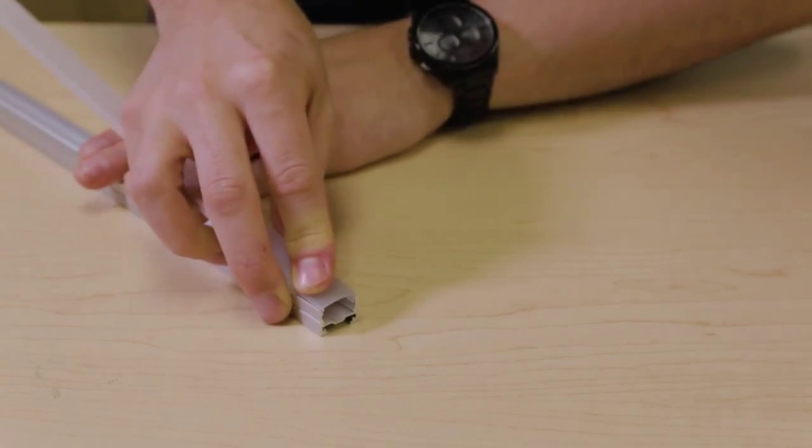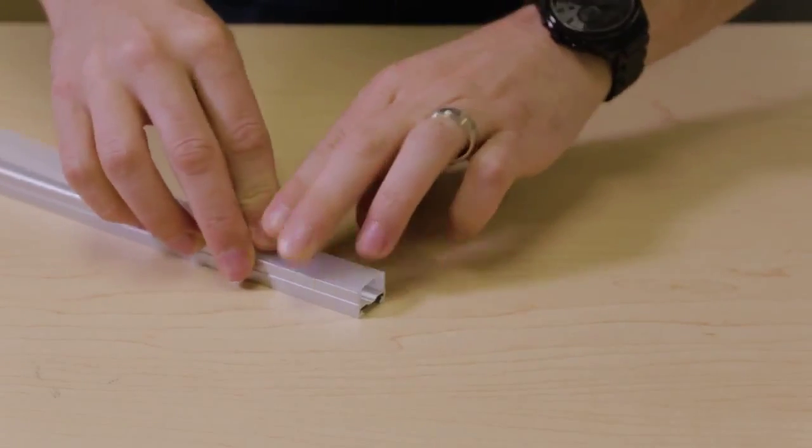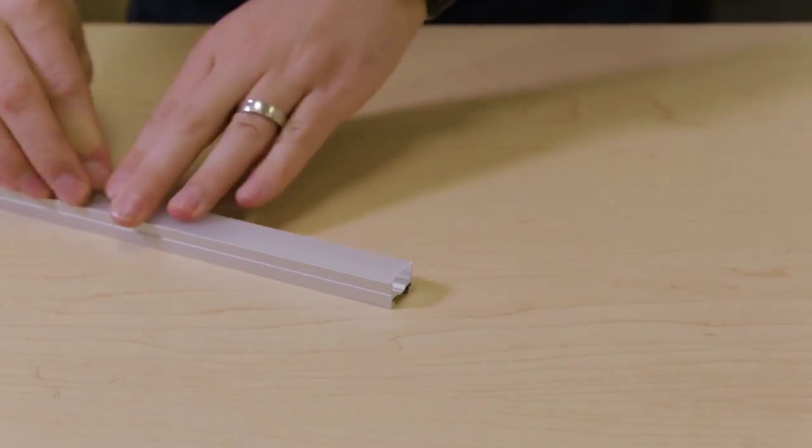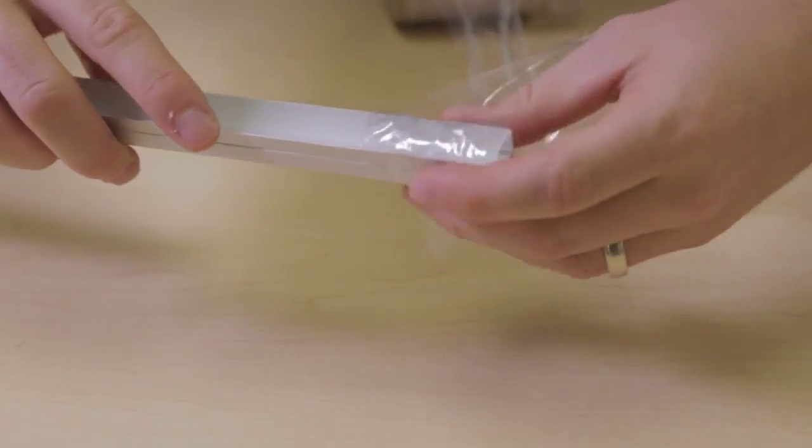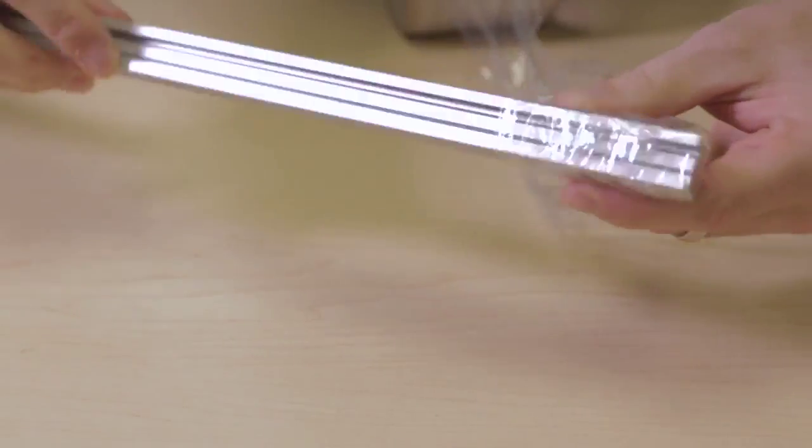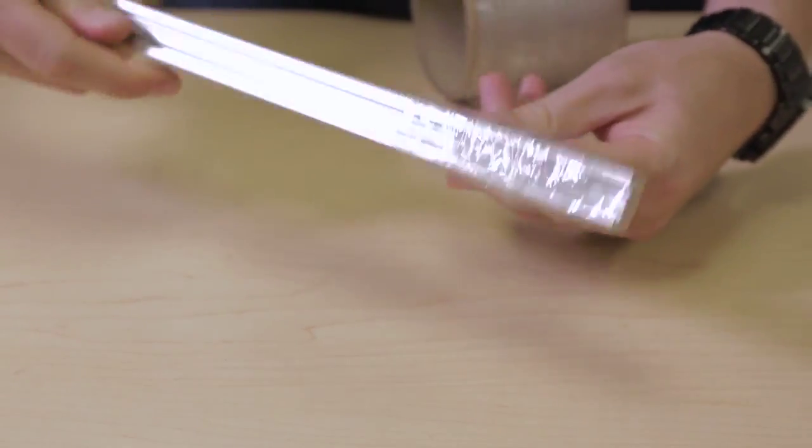The key before cutting is to make sure you've inserted and secured the diffuser to the extrusion. We suggest using shrink wrap to ensure that the diffuser does not move during cutting.